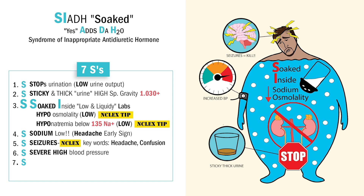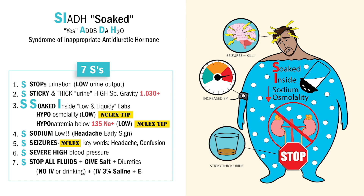Next S is for severely high blood pressure. Since in SIADH we stopped urinating and now we're swelling inside, blood pressure will be up as well as edema. Which brings us to our last S — we stopped urinating out, so we stopped fluid in. The key word here is that we add salt to prevent those seizures from that low sodium. So we stop all IV fluids except if we need to give 3% saline or sodium chloride via IV. Diuretics can be given to drain the fluid-filled body, but that didn't come up in our NCLEX question surveys, so diuretics are probably not a main intervention here.